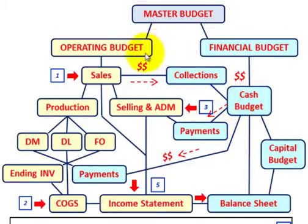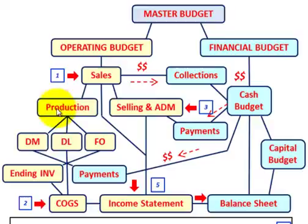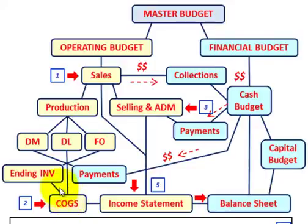The income statement budget falls under our operating budget and is the last budget to be prepared there. It depends on all the other budgets: we need our sales budget, then our production budget, selling and administrative budget, direct material, direct labor, and factory overhead budgets, which flow into the ending inventory budget, then into cost of goods sold, and finally into our income statement.